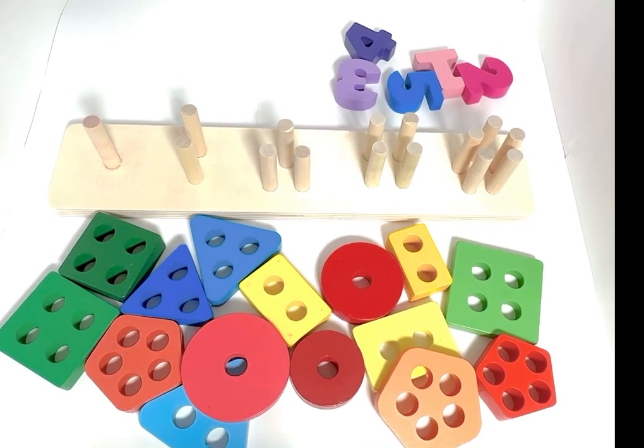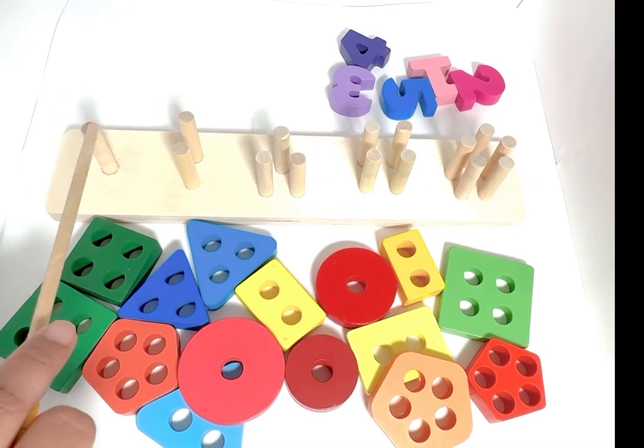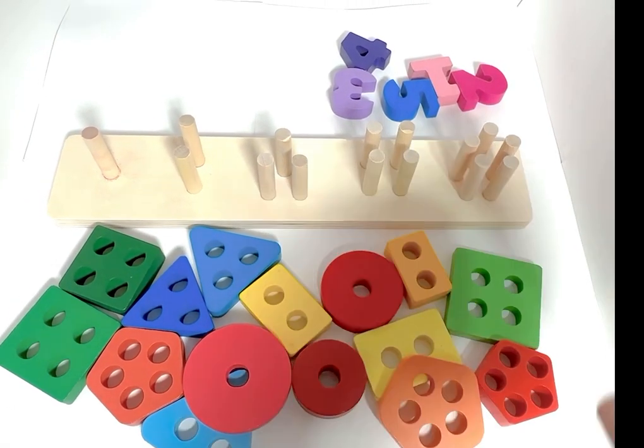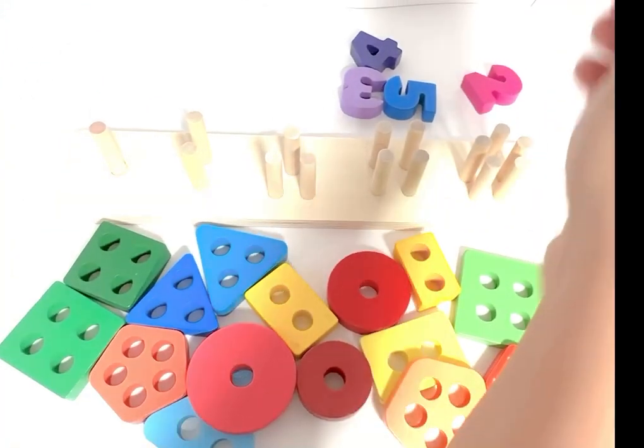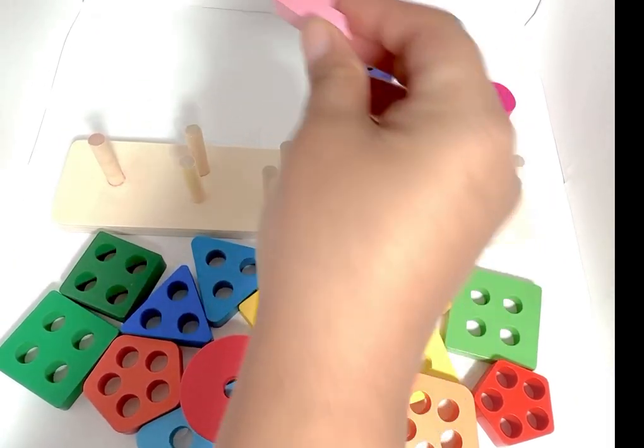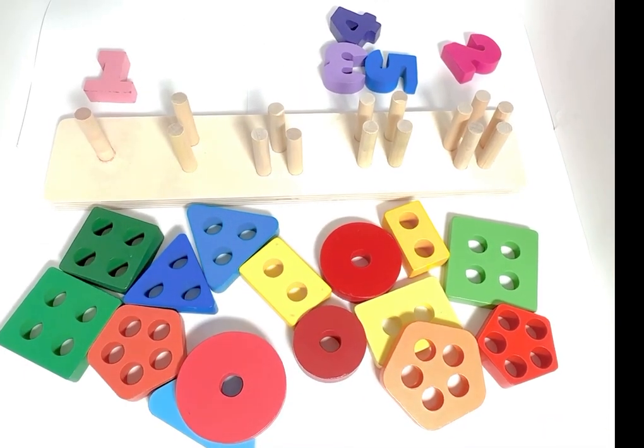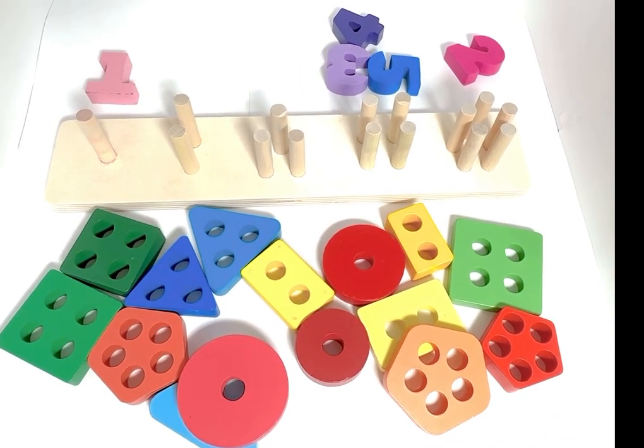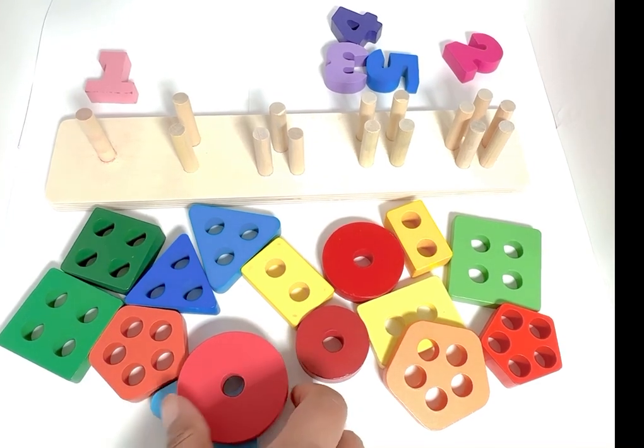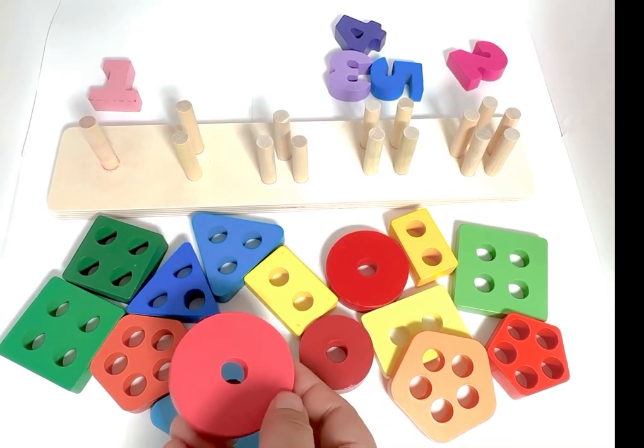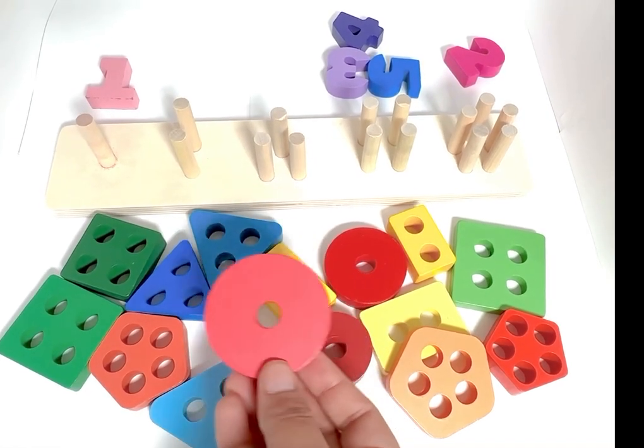Let's see how many pegs we have here. One. One peg. Let's see which shapes over here have only one hole in it. Yes, we see the circle.